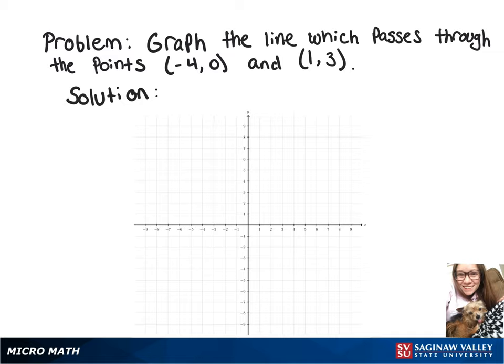To graph the line that passes through the points negative 4, 0, and 1, 3, we need to plot those points on our graph. So we'll go left 4 and stay on the x-axis, and then we'll go right 1 and up 3, and then we'll draw a line connecting those points.